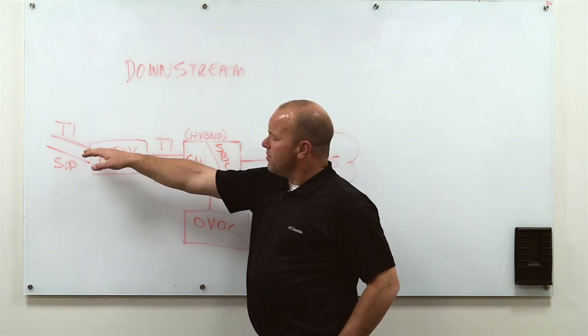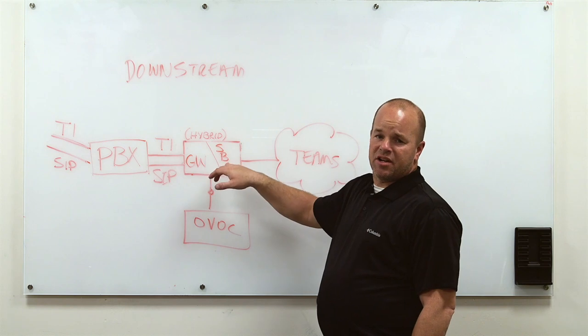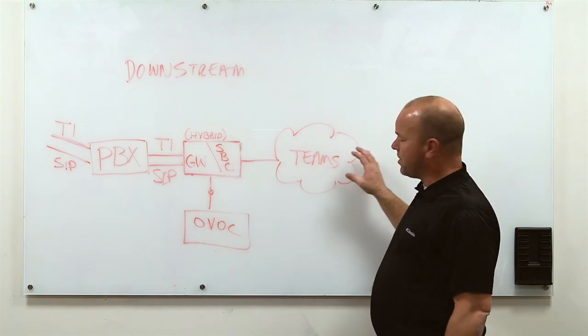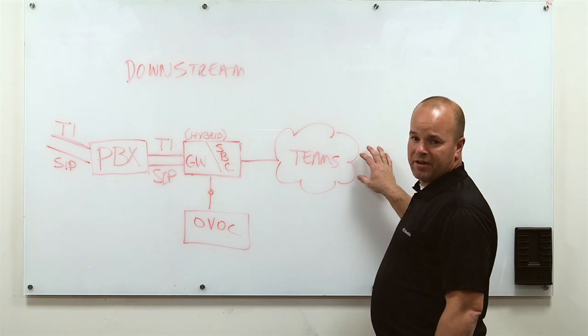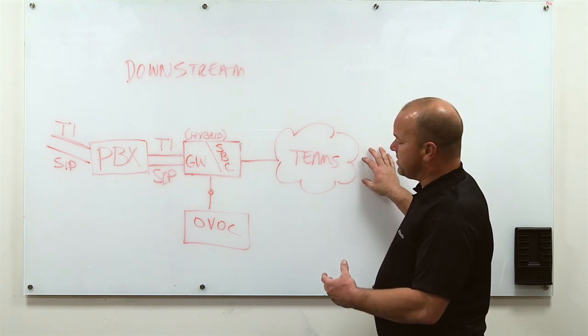So coming in itself, we have the T1 going over to the gateway and then the gateway is actually going to send it over to the SBC. And the SBC is going to be the thing that interacts with the Microsoft Teams environment. They have the direct calling, the direct routing plan take place there for you.